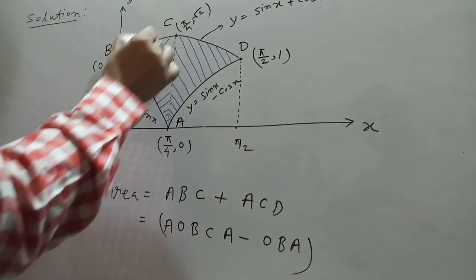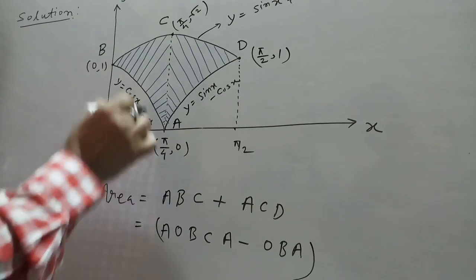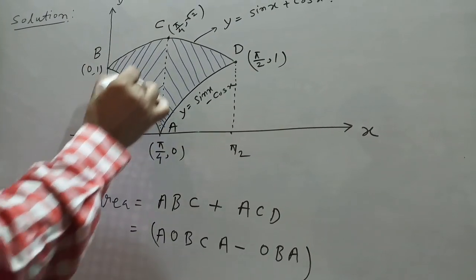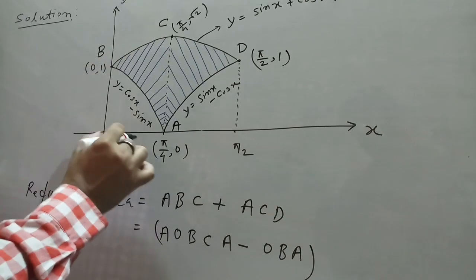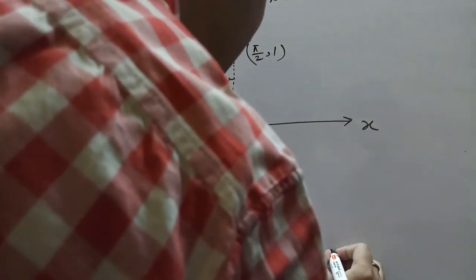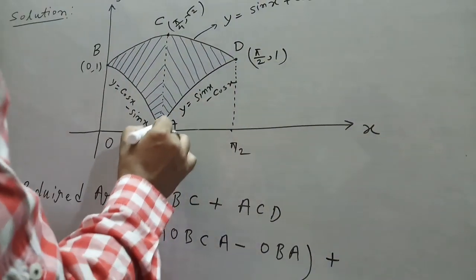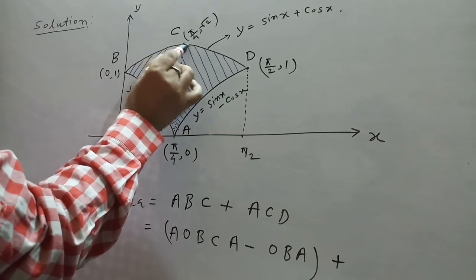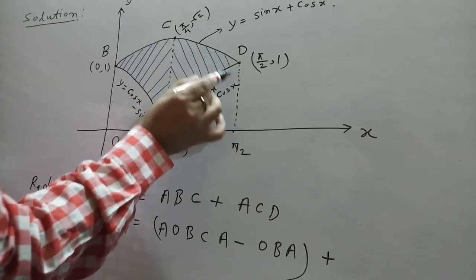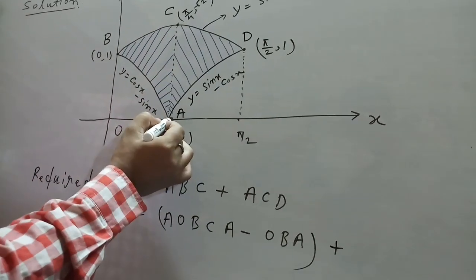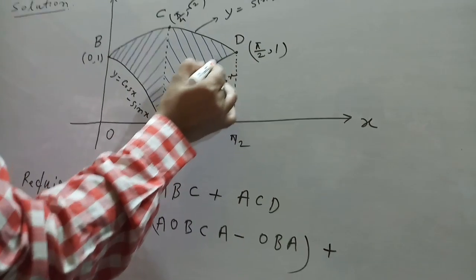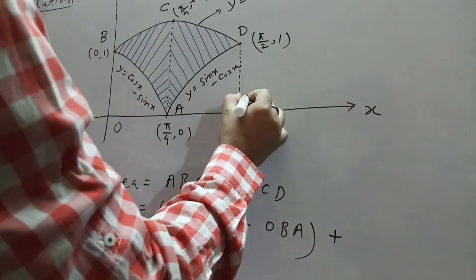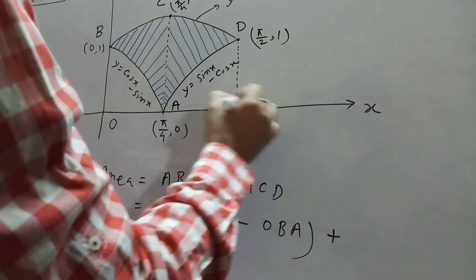Area ABC is the area under curve from O to A minus the triangular area OBA. And area ACD equals the area under the sin x + cos x curve minus area ADE. That is, area ACDEA minus area ADEA, where E is the point on the x-axis.